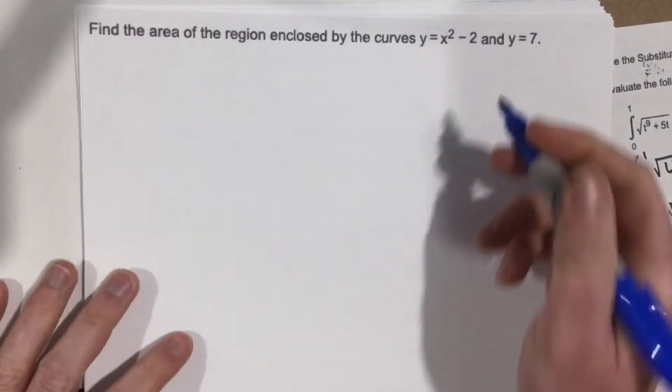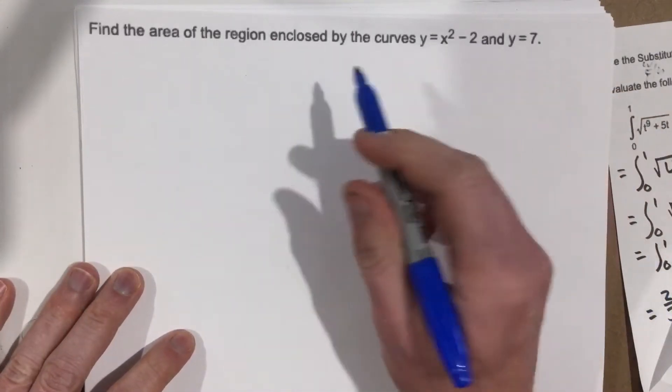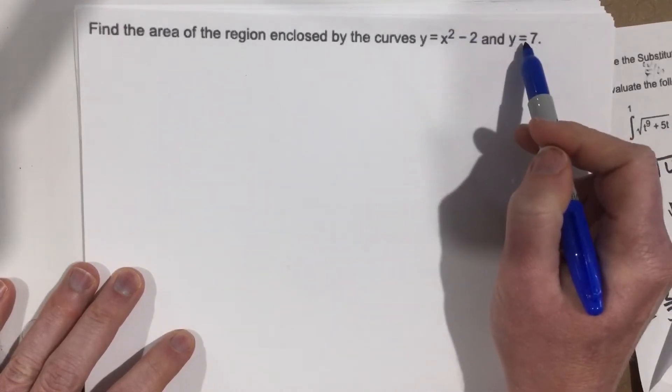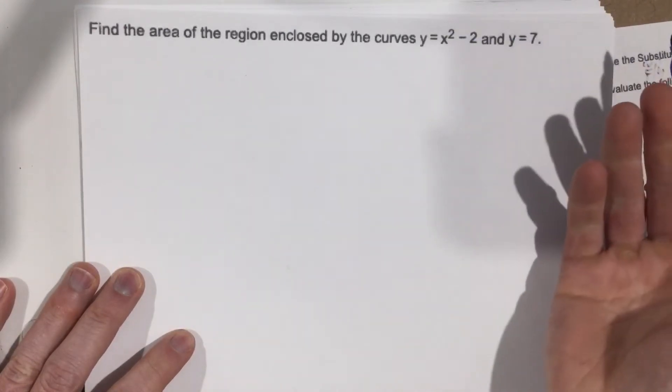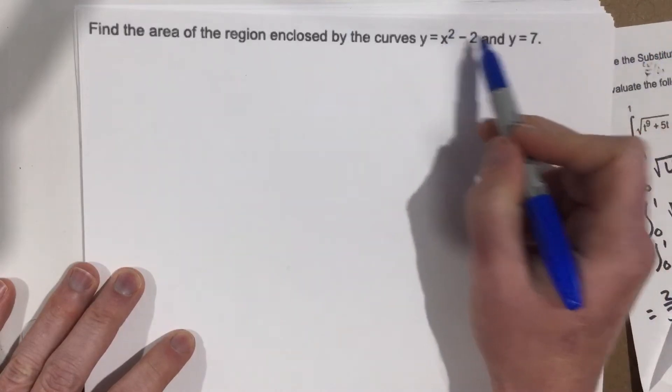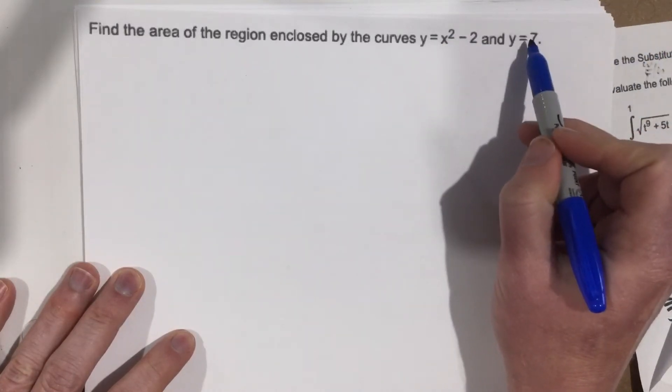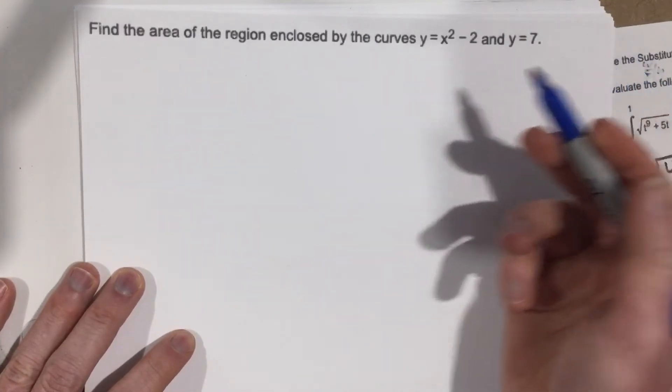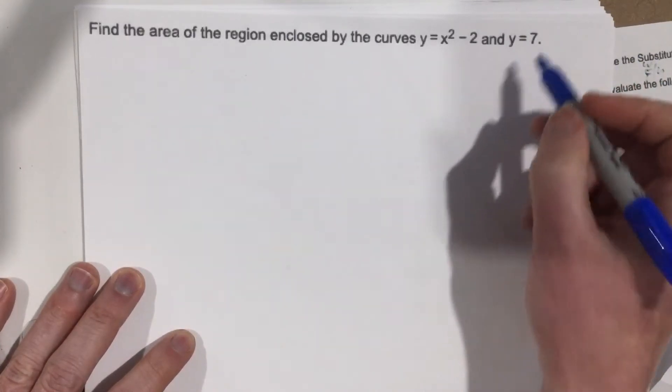So I think to start this problem, what we want to do is we want to find where does this function cross this function. Well, if we think about that, where does this function cross this function? Well, it's going to cross this function when they're equal to each other. So let's set them equal to each other and essentially find the roots, find the spots where they intersect.